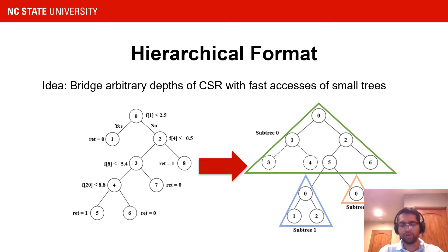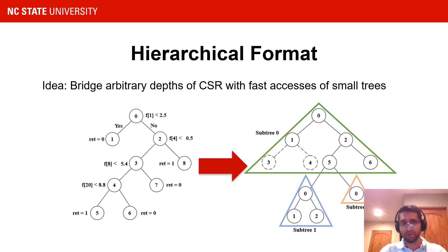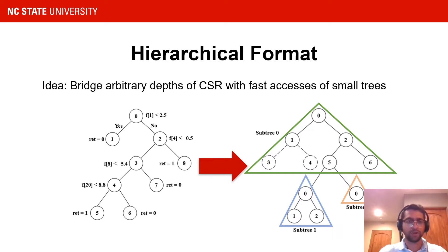To address the shortcomings of both approaches while exploiting the benefits of each, we propose a hierarchical tree format. The hierarchical format introduces a concept of subtrees, which are portions of a decision tree that are made complete. Subtrees are connected to one another using a CSR format and are limited in size by a maximum subtree depth parameter. Accessing nodes within a subtree requires only arithmetic indexing, enabling fewer indirect memory accesses. Once traversal reaches a subtree boundary, CSR index arrays are accessed to enable arbitrary tree depths.